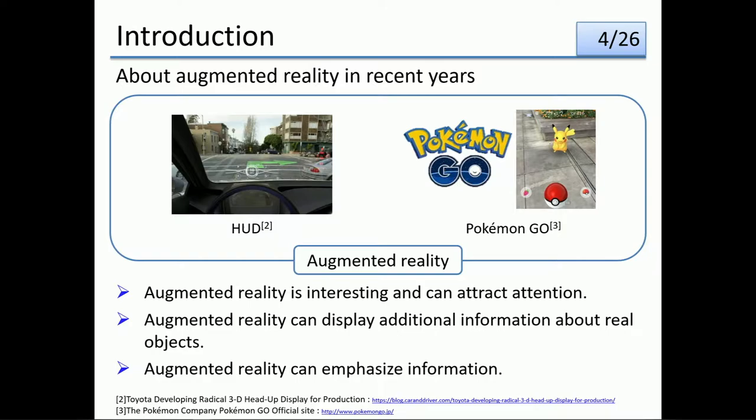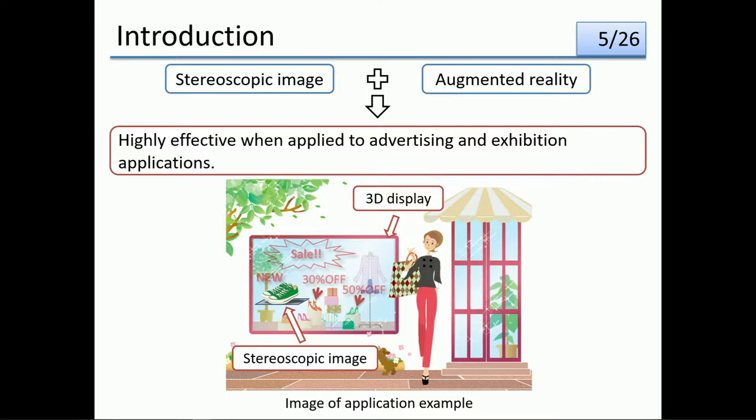In addition, it can display additional information about real objects and science information. Therefore, we consider a 3D display that combines stereoscopic images with augmented reality. We consider that it will be highly effective when applied to advertising and exhibition applications.